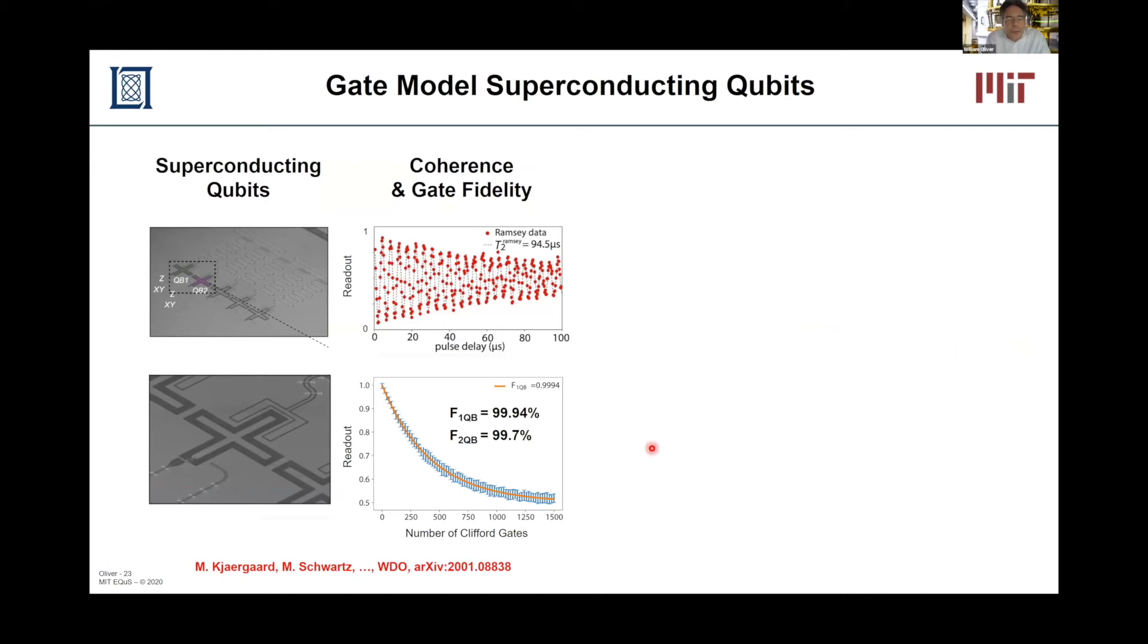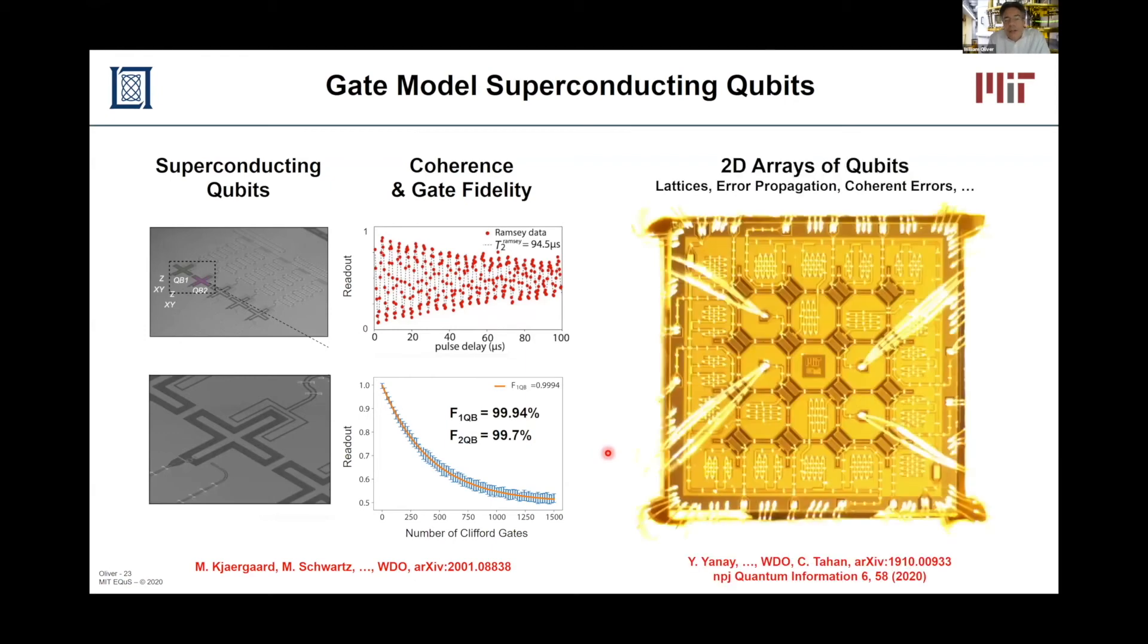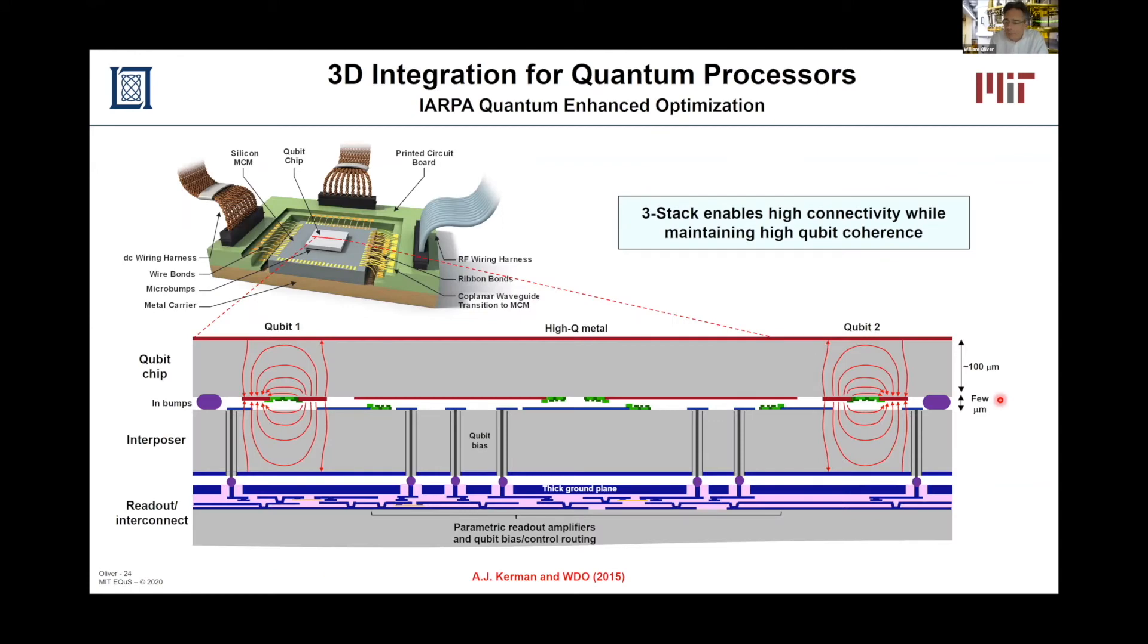The qubits that we do make from aluminum have very high coherence times. Here's example of Ramsey data at about 100 microseconds. And of course, what matters for quantum computing is the fidelity of the gate operations. How well can we do a rotation from the north pole to the south pole or a two qubit conditional gate? Our best today is we have between three and four nines single qubit fidelities. And our two qubit fidelities are state of the art at 99.7%. And with that, we're applying it to larger and larger qubits. Here's an example of a 16 qubit array with which we're doing Hamiltonian lattice simulations. But you can already see that we're starting to get some pretty long wire bonds into the center of the chip. This won't scale to five by five or six by six in any reasonable way. We know that we have to come in from the third dimension.